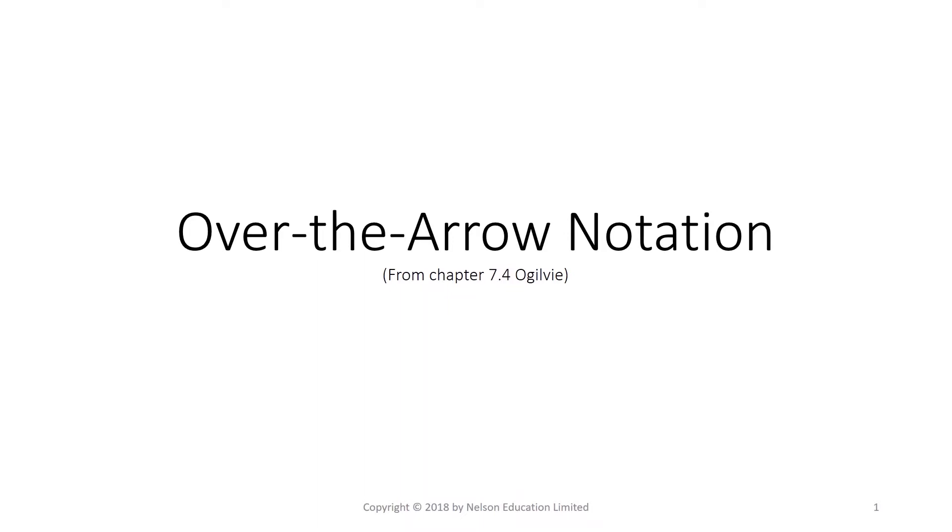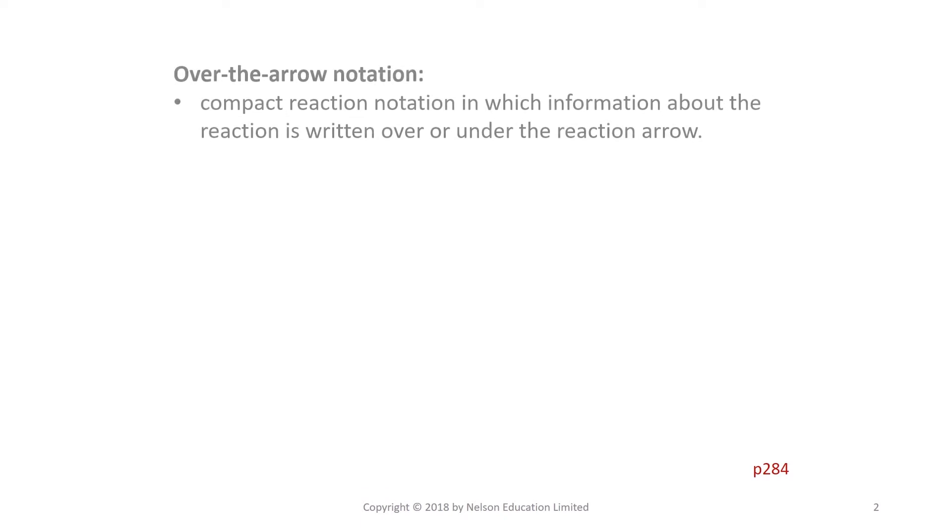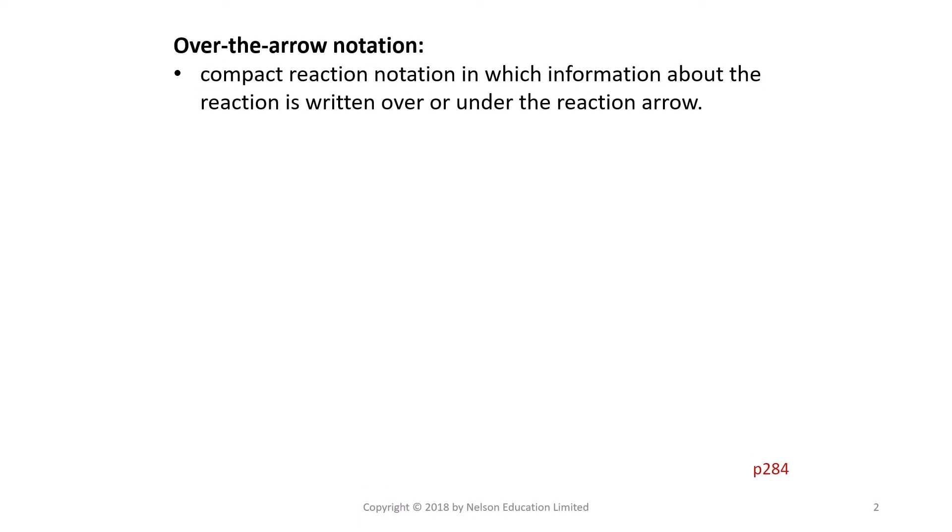Over-the-arrow notation is used very frequently in organic chemistry, and this is a compact or space-saving method to give information about the reaction conditions which are written over or under the reaction arrow.